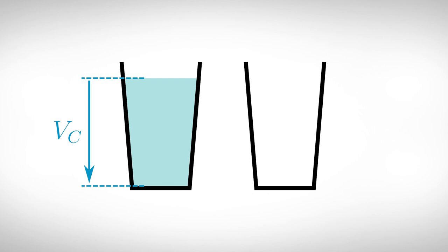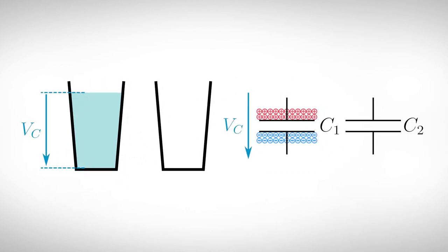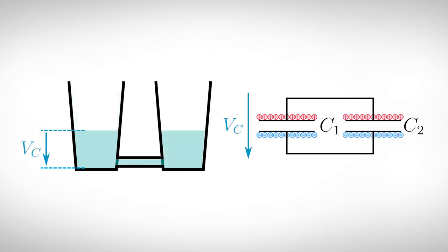We can compare this process with two glasses of water. One of which is full and one is empty, representing the charged and discharged capacitor respectively. If we connect both glasses at the bottom, a water flow will occur until both glasses have the same amount of water. This represents the current flow from one capacitor to the other.